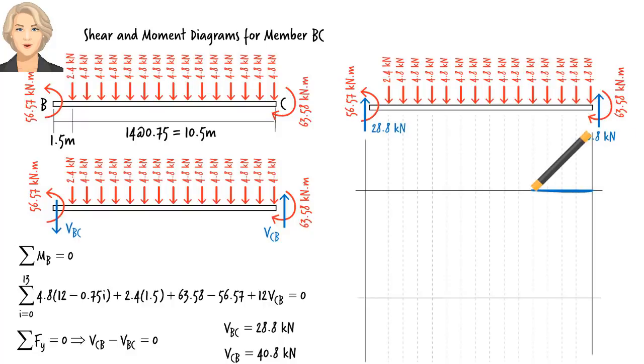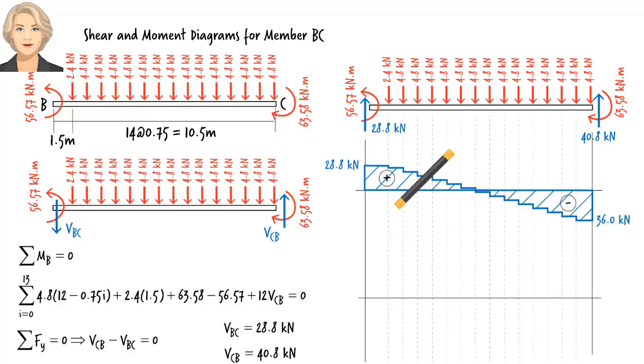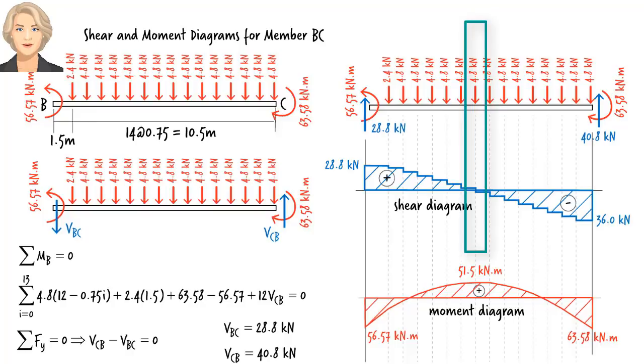Now, first draw the shear diagram, then use it to construct the moment diagram. If you are not sure how these diagrams are constructed, see Lectures Essay 06 through Essay 09. So, the maximum positive moment in the segment occurs under the seventh concentrated load from the left end of the beam.